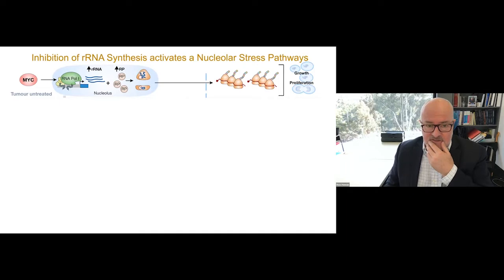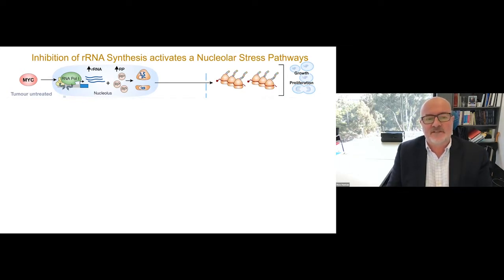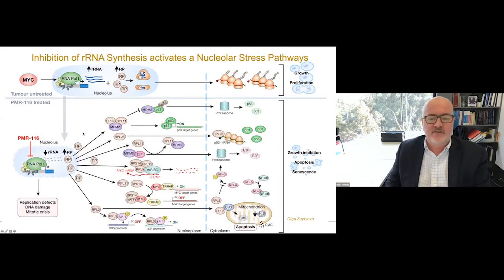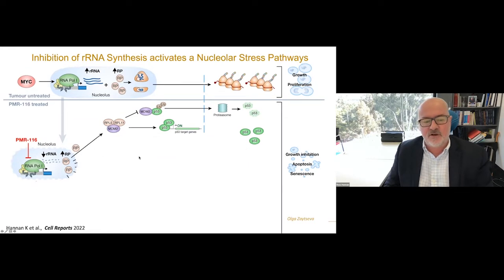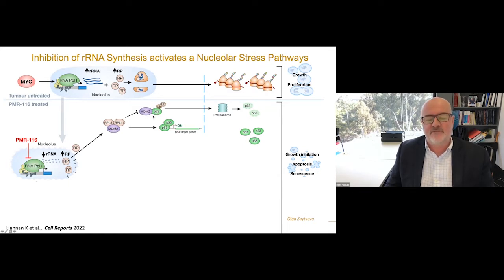The question is: what happens if you inhibit RNA synthesis? It turns out that the nucleolus has evolved mechanisms to sense fidelity of the ribosomal biogenesis pathway. When this pathway is dysregulated, it activates checkpoints. Disrupting ribosome biogenesis leads to disassembly of the nucleolus, allowing ribosomal proteins to exit and perform other functions — such as activating P21, turning off MYC, and turning off E2F. The most predominant pathway is regulation of the tumor suppressor P53: two ribosomal proteins, L5 and L11, bind the ubiquitin ligase MDM2, preventing it from degrading P53, leading to accumulation of P53 and growth arrest, apoptosis, or senescence.